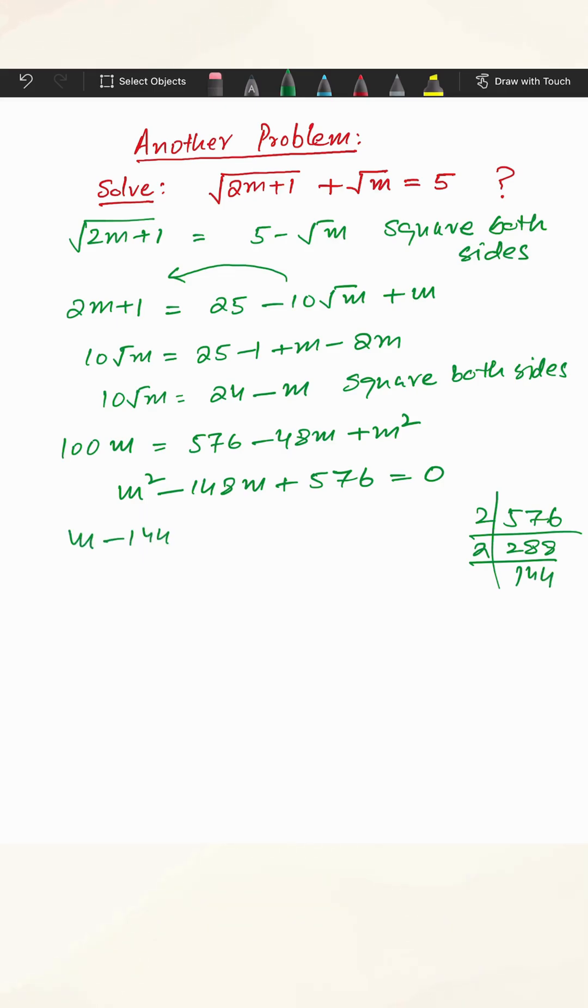So m minus 144 and m minus 4 equals 0. Either m equals 144 or m equals 4.